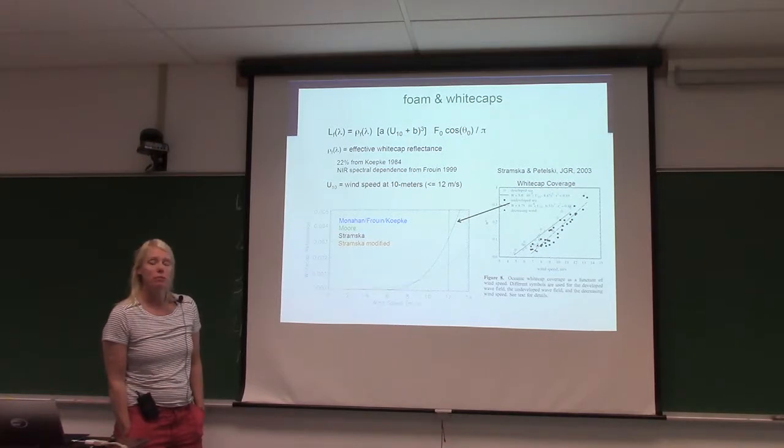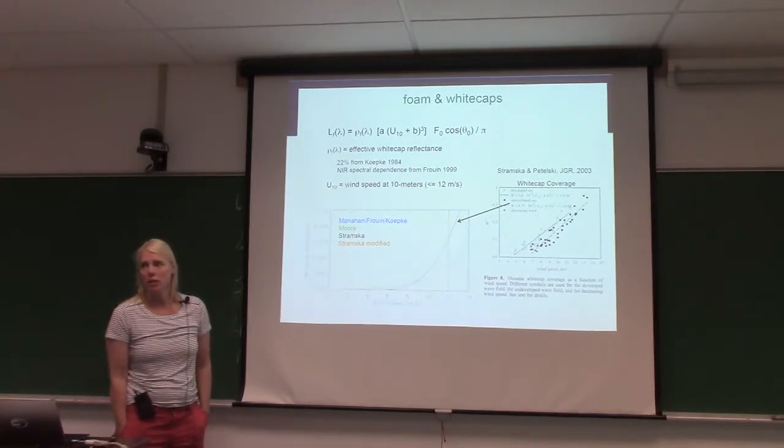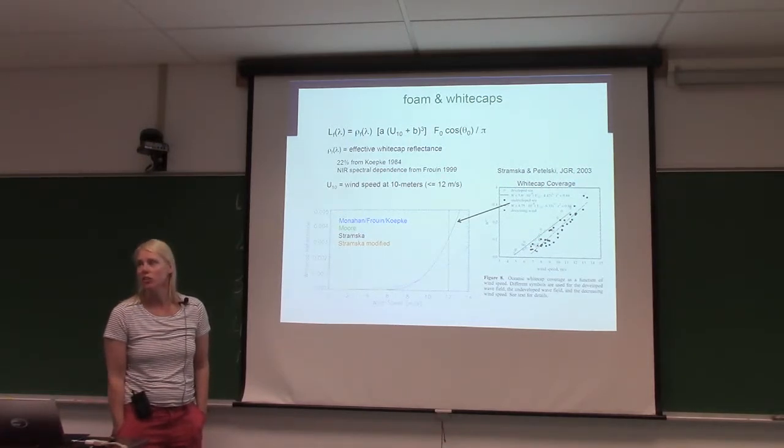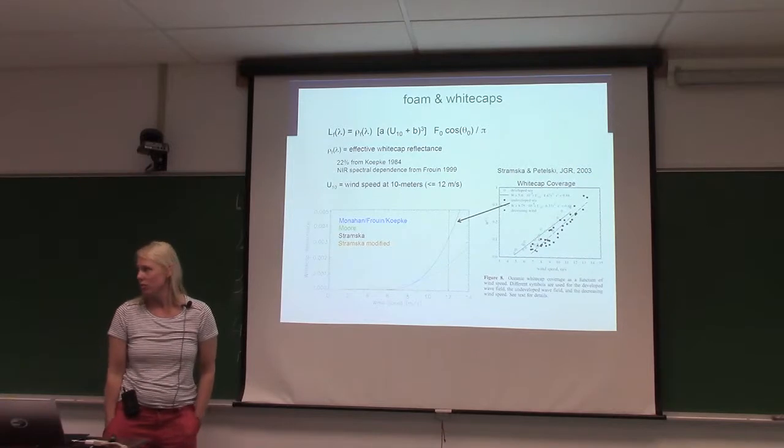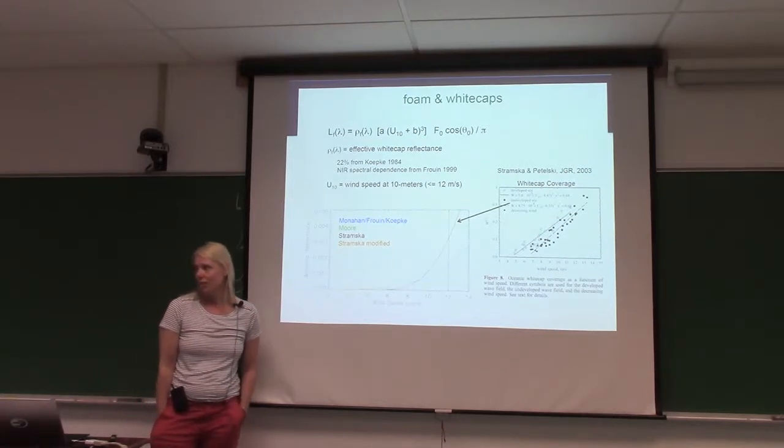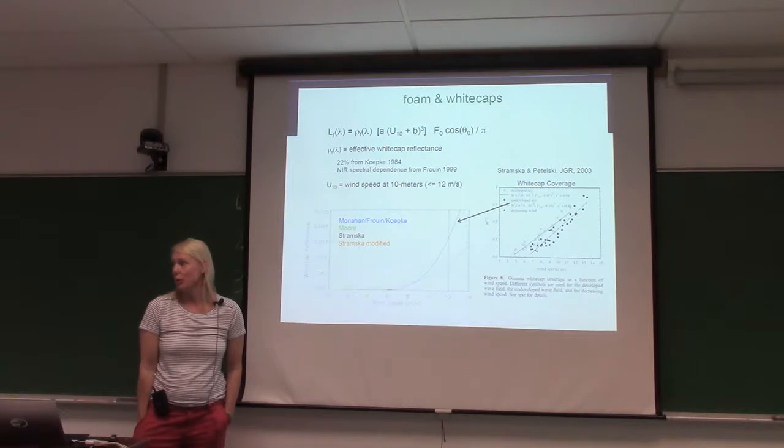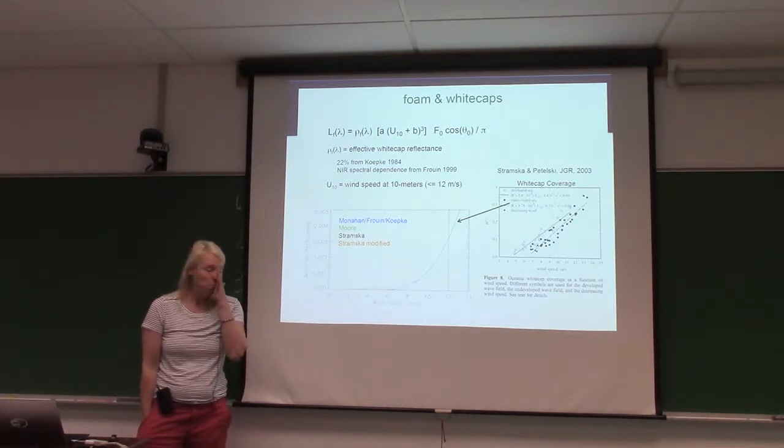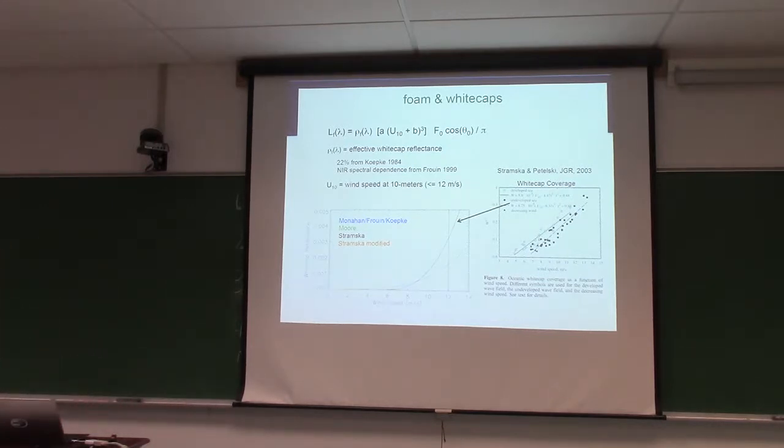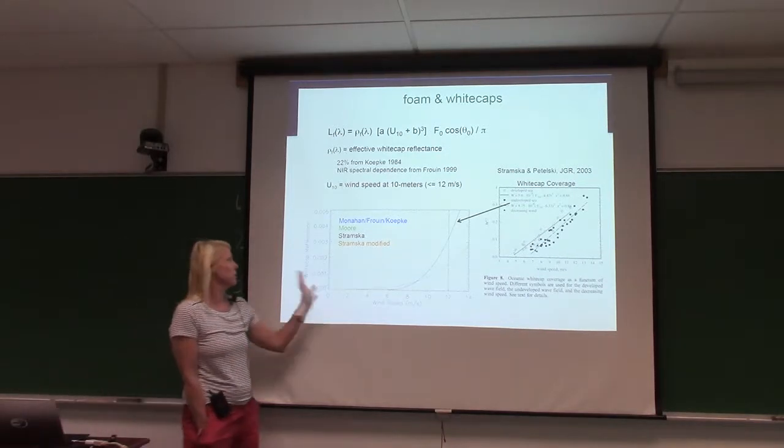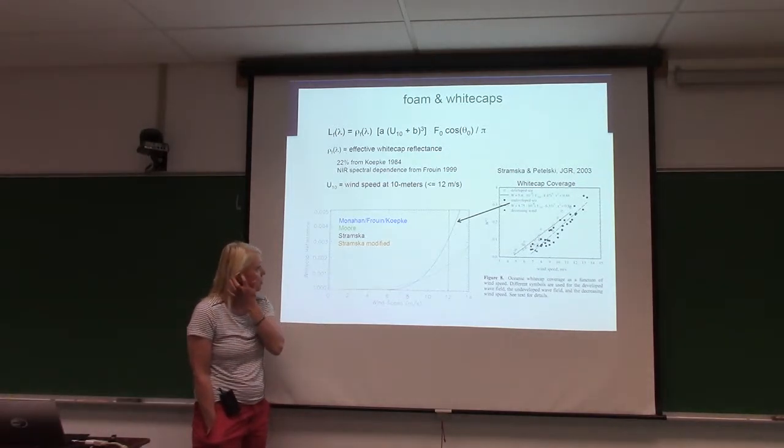So they're pretty bright. 100% would be bright white. So they're like a nice solid gray, pretty bright considering what percent the ocean surfaces, which is like 0.1, 0.6, reflective. So we have these bright manifestations. We use some wind speed to whitecap relationship.